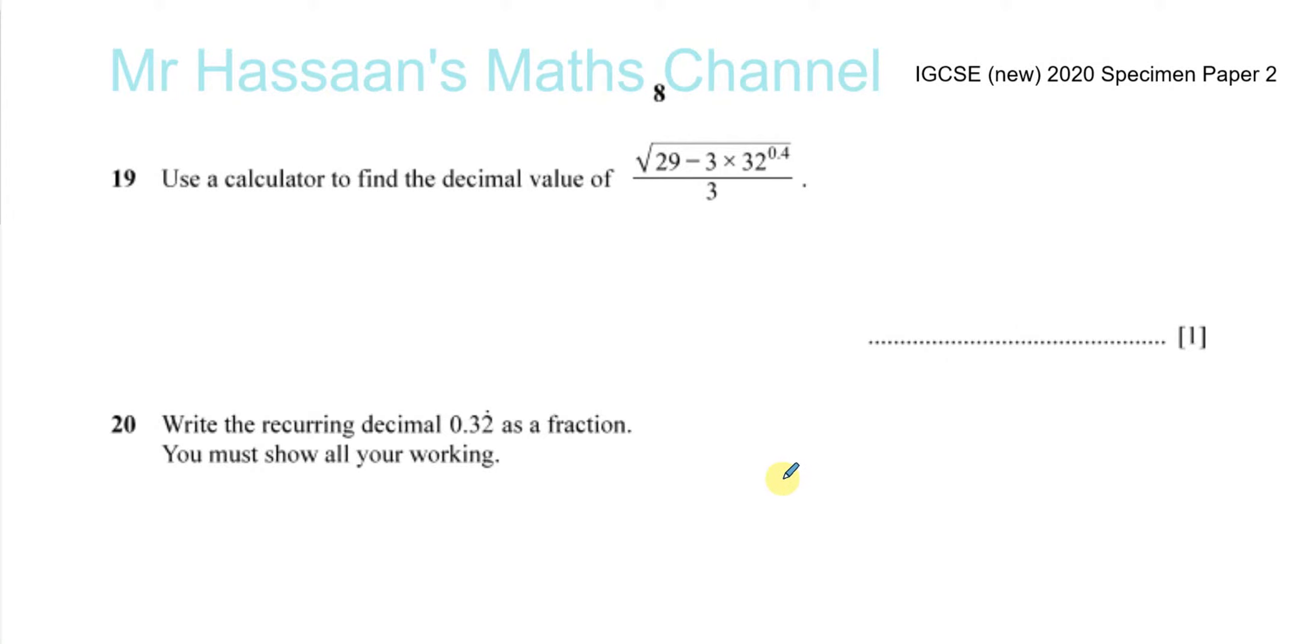Question number 19 from the specimen paper 2 of the 2020 syllabus for IGCSE Cambridge: use a calculator to find the decimal value of this expression: the square root of 29 minus 3 times 32 to the power of 0.4 over 3. It's testing how well you use your calculator, so you simply have to put it in exactly how it looks.